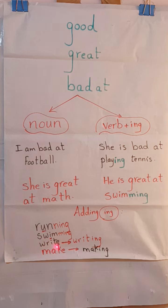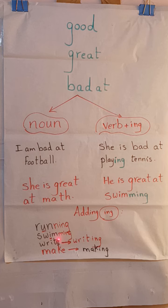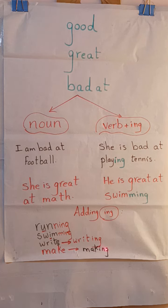What about a verb that ends with -e, like 'write' or 'make'? I simply omit or delete the -e and then add -ing.